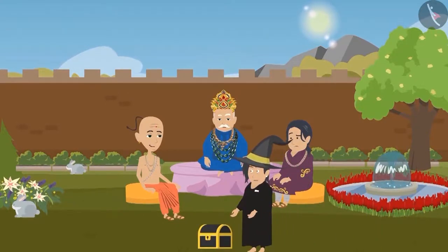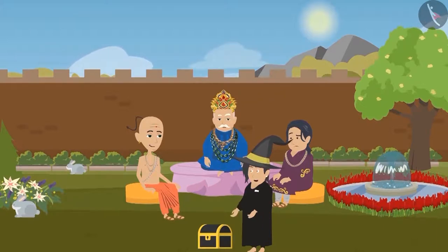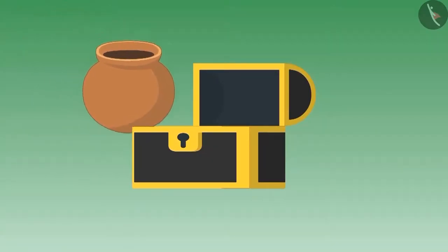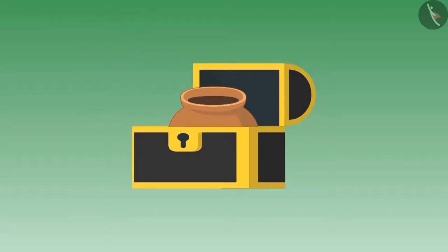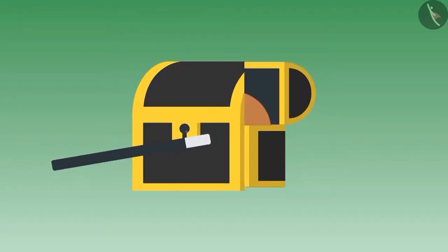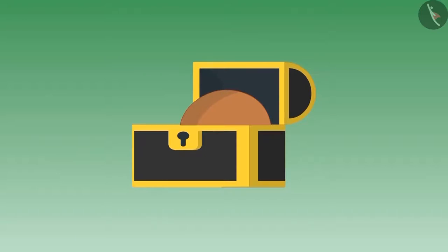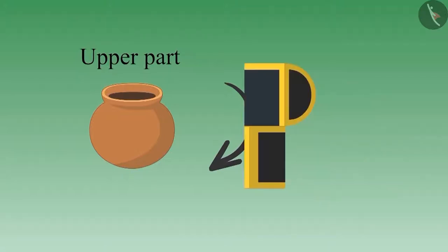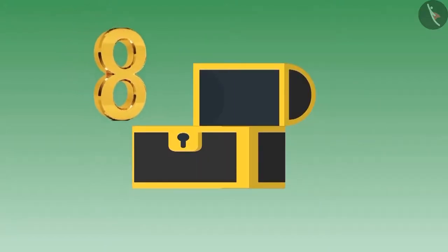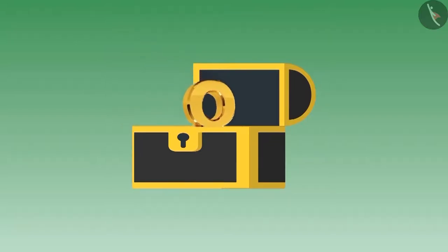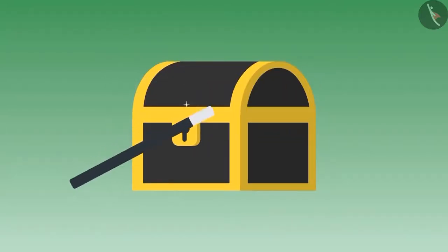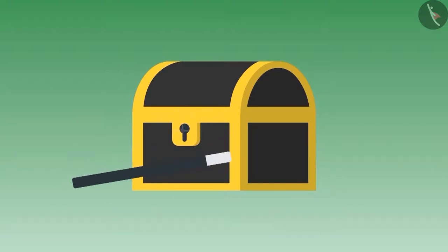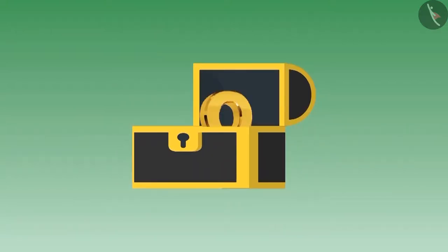The magician said to the king that if he keeps anything inside the box, it will rotate upside down. The king gestured to Tenali Raman first. Tenali Raman placed a pot inside the box. The magician recited the magical words and opened the box — the pot had turned upside down. Now Tenali Raman placed the number eight, made of iron, upright in the box.